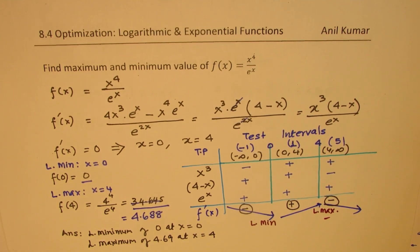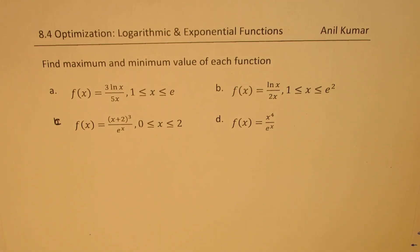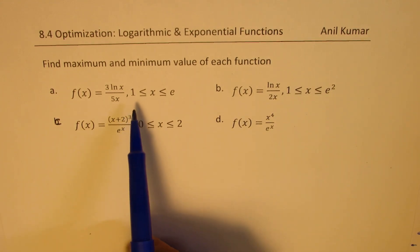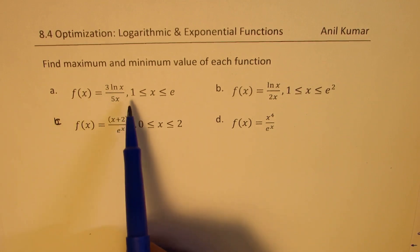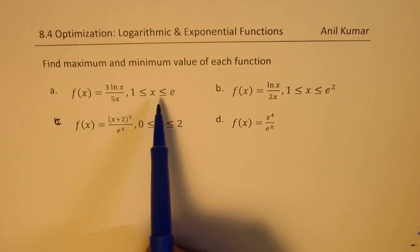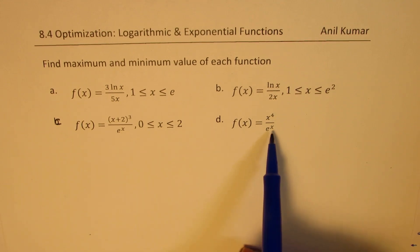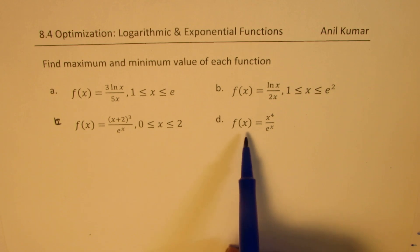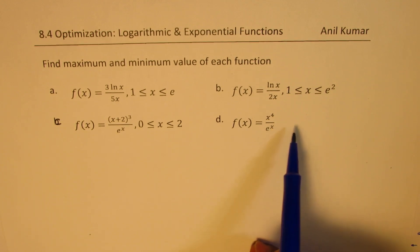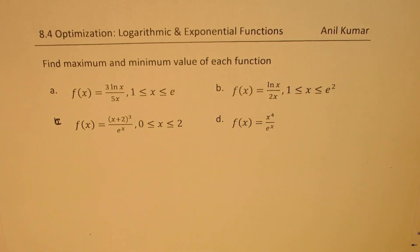So I hope you appreciate this approach. We solved four examples: three with closed intervals, where we find critical numbers and evaluate at critical points and endpoints, comparing to get absolute maximum and minimum. When the interval is open, we analyze the first derivative to find local maximum and minimum. You could also use the second derivative test to find local extrema at critical numbers. In the next video, we'll take up application questions on optimization related to logarithmic and exponential functions. Thanks for your time and all the best.